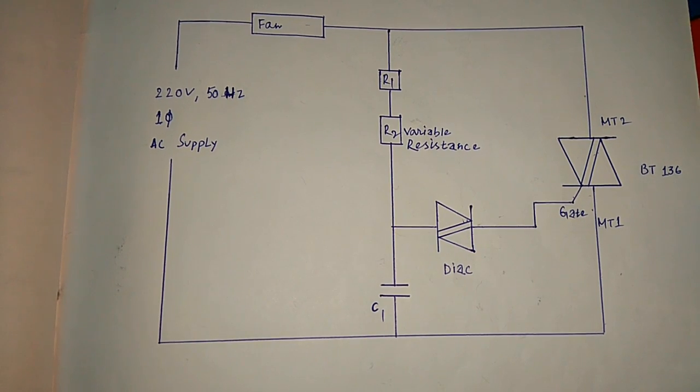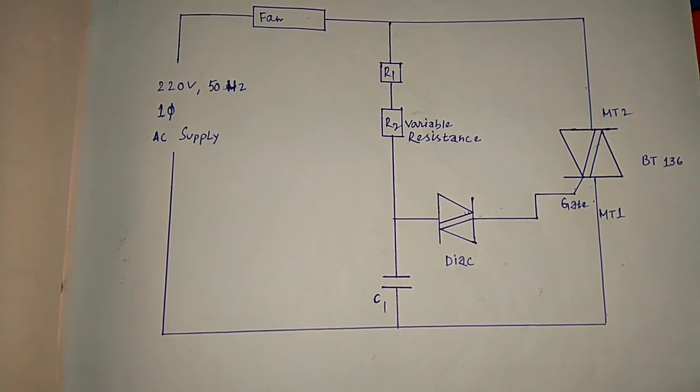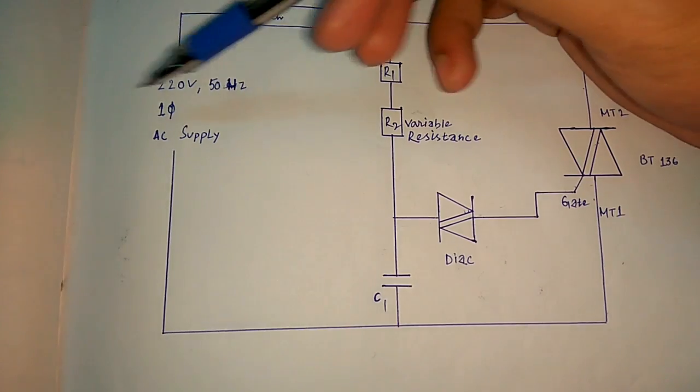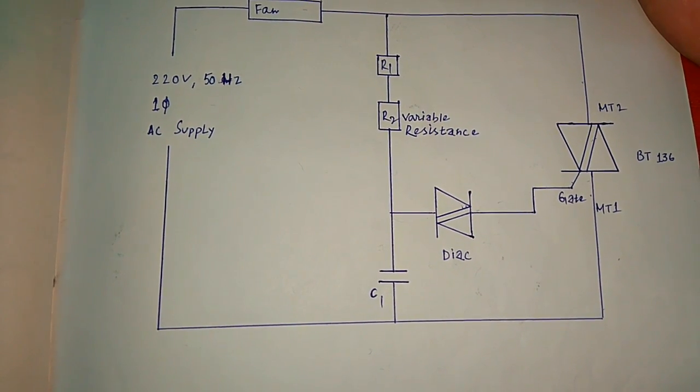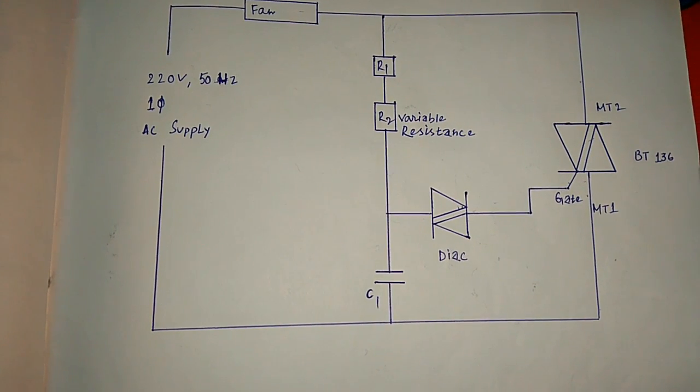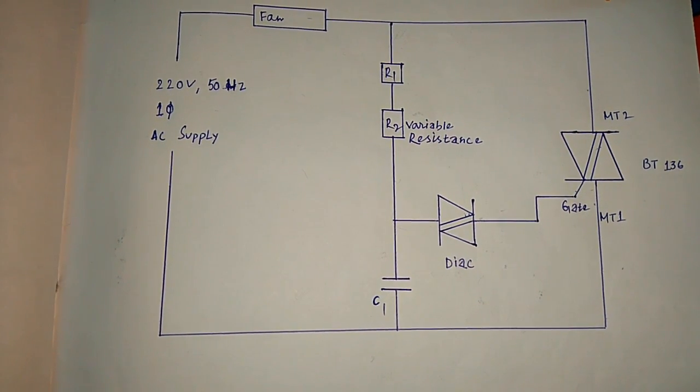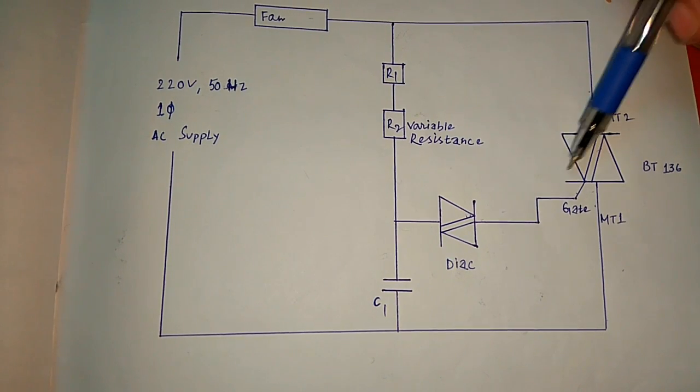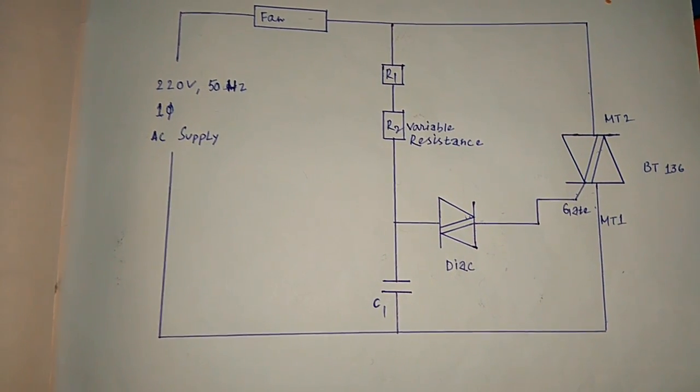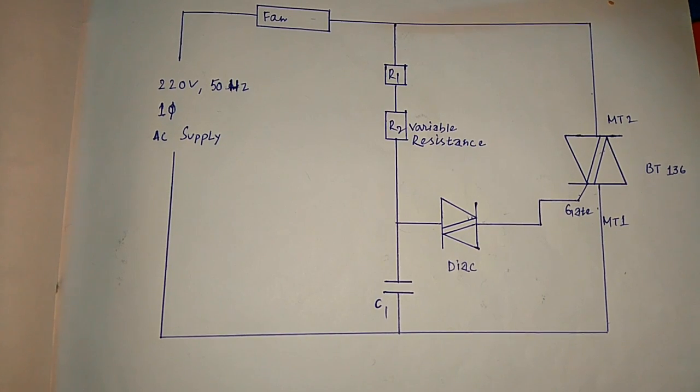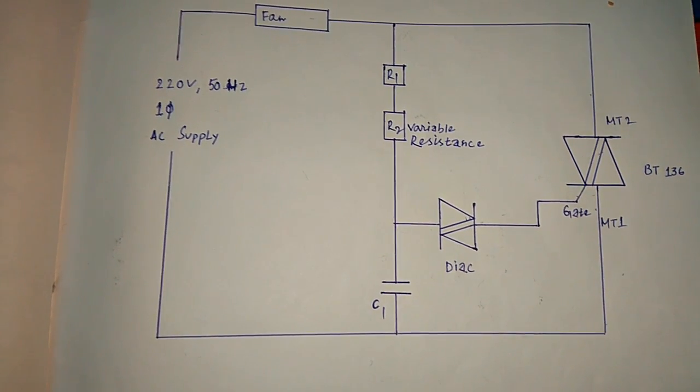Before we give the power supply to the circuit, the variable resistor or potentiometer should be kept in maximum resistance position, so that no triggering can be applied to TRIAC through this gate. Hence the TRIAC will be in cutoff mode. So no power supply, maximum variable resistance, TRIAC is switched off.